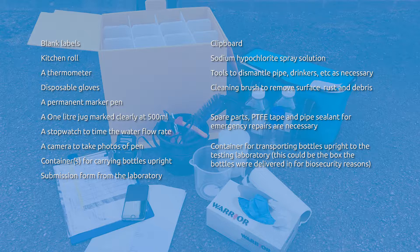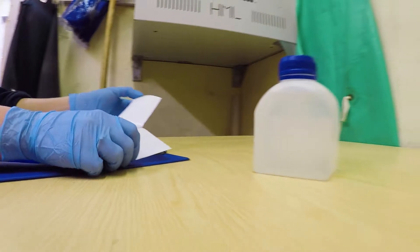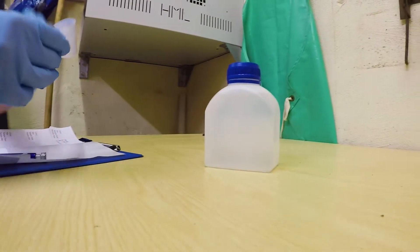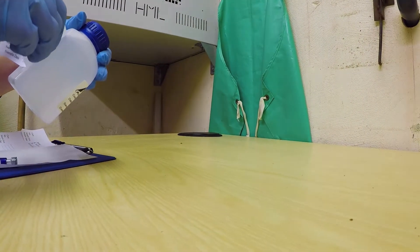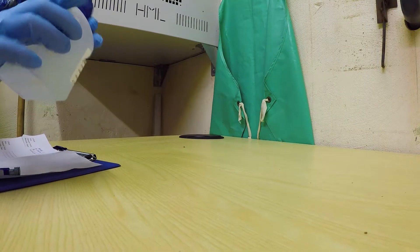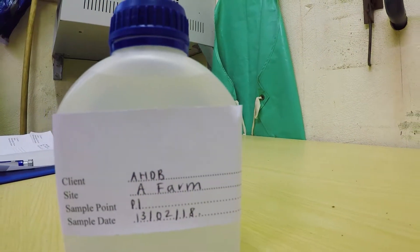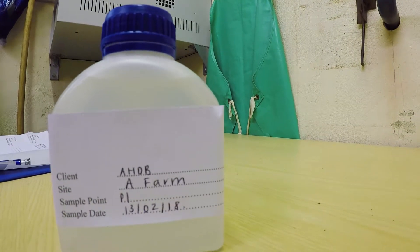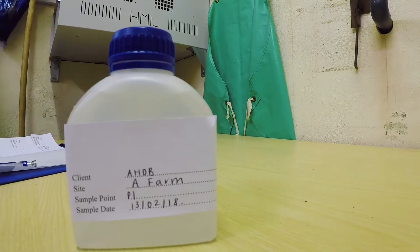Once your bottles have arrived, start by completing a label for each one. It is advised that you don't affix these until after the sample has been taken. However, in order to prevent bottles being mixed up, you can always mark the lids using a permanent marker.